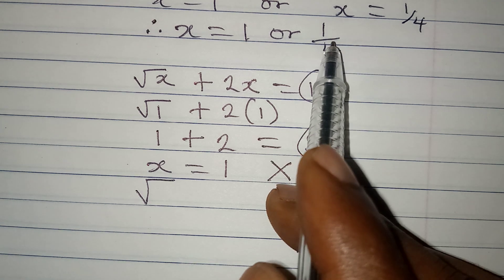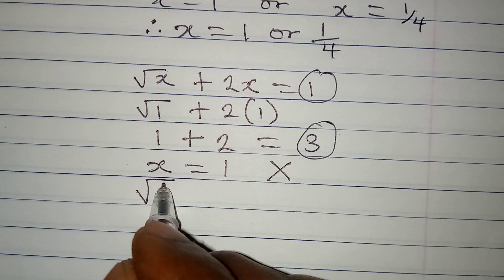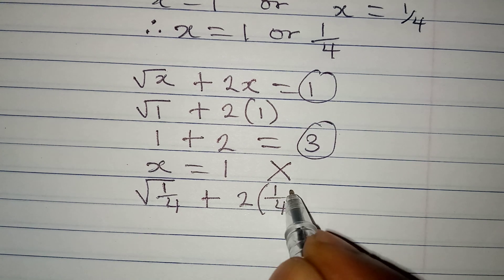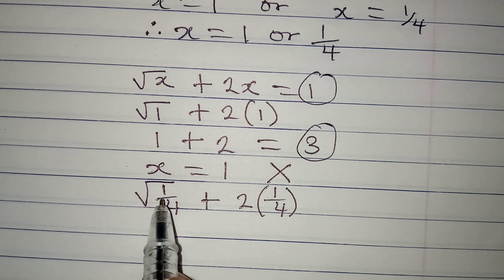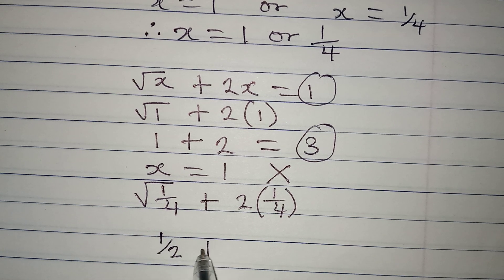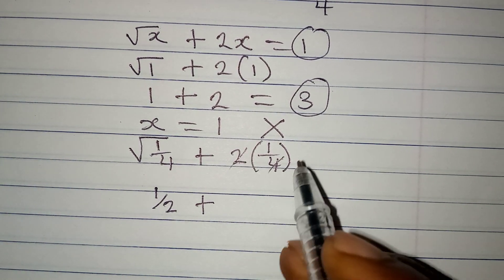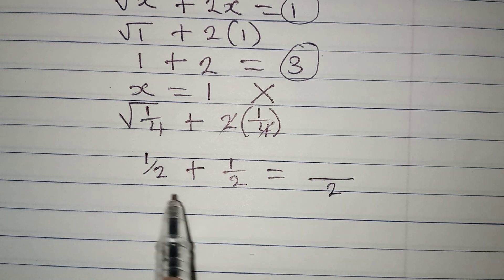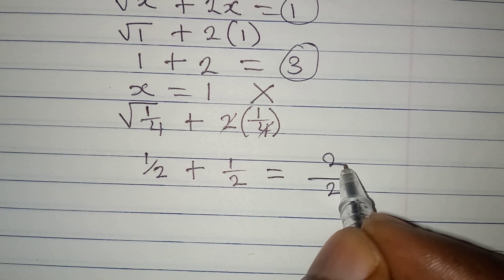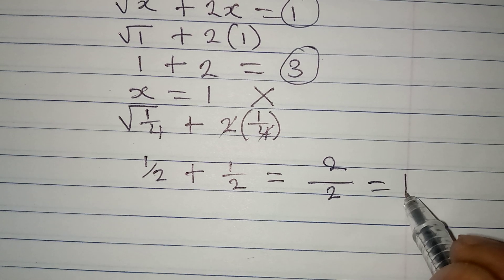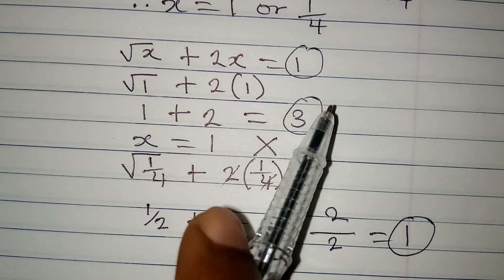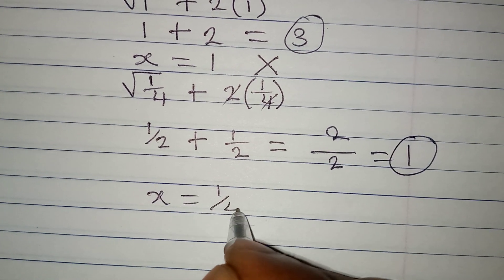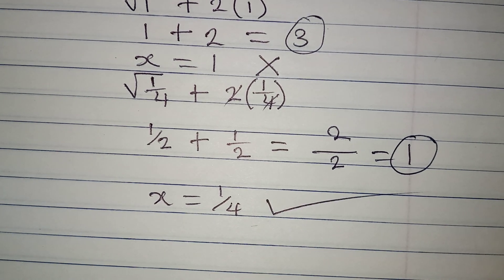Now testing the second solution x equals 1/4: square root of 1/4 plus 2 times 1/4. Square root of 1/4 is 1/2, and 2 times 1/4 is 1/2. So we have 1/2 plus 1/2. The LCM is 2, giving 1 plus 1 over 2, which equals 2/2 equals 1. This confirms that x equals 1/4 truly satisfies the equation.